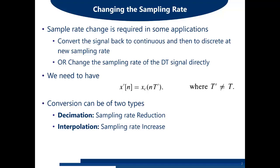The basic requirement is to obtain a new signal x'(n), which equals x_c(nT'), where T' is not equal to the original sampling period T. Conversion can be of two types: decimation, which is sampling rate reduction, and interpolation, which is sampling rate increase. In this lecture we will discuss decimation, and in coming lectures we will discuss interpolation.